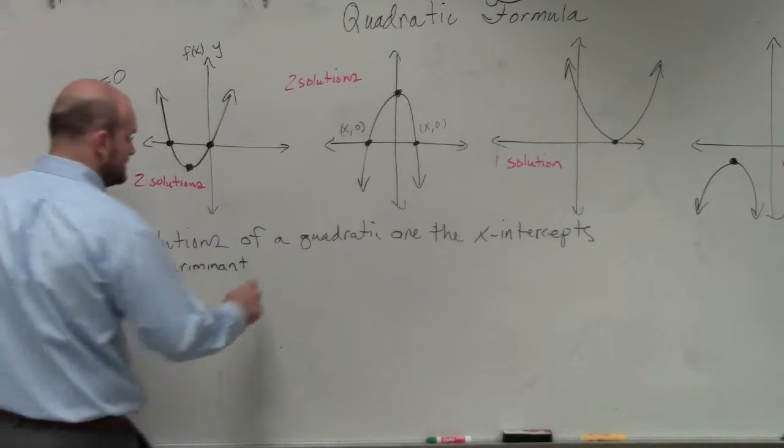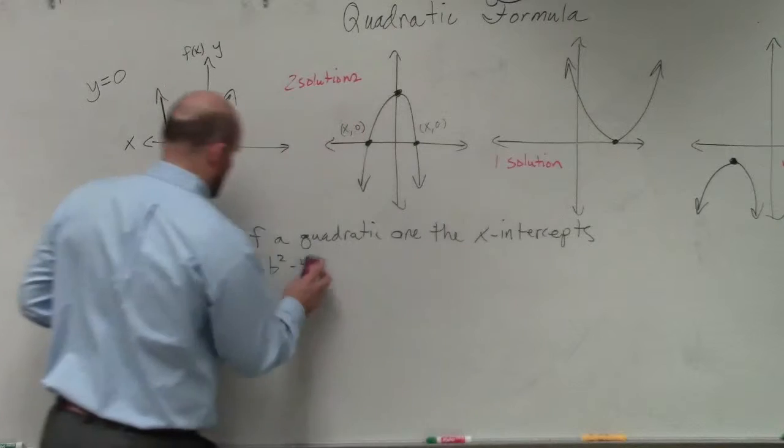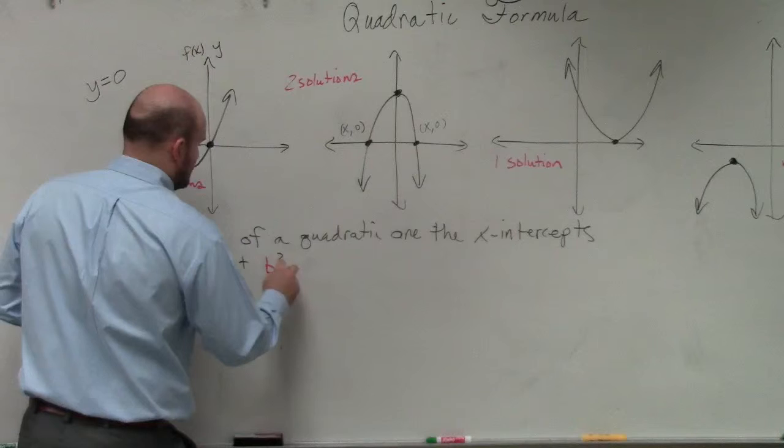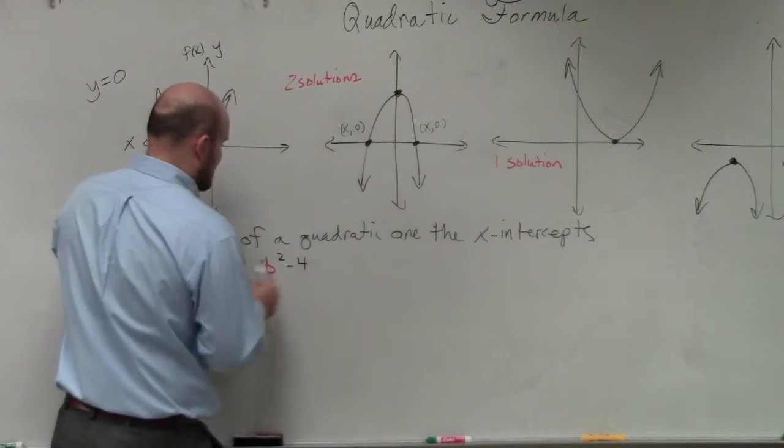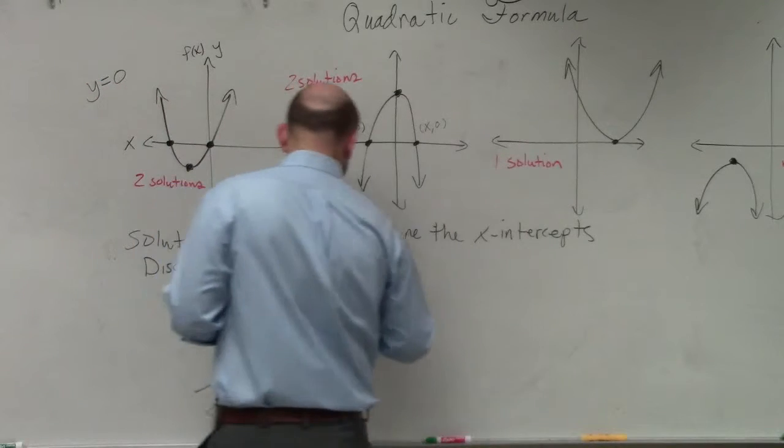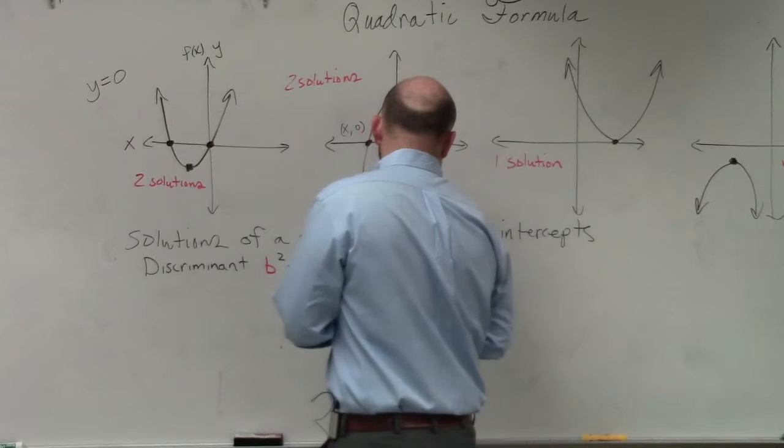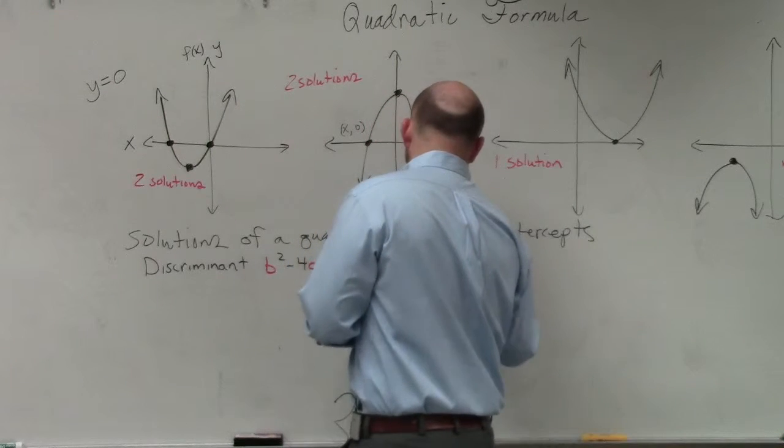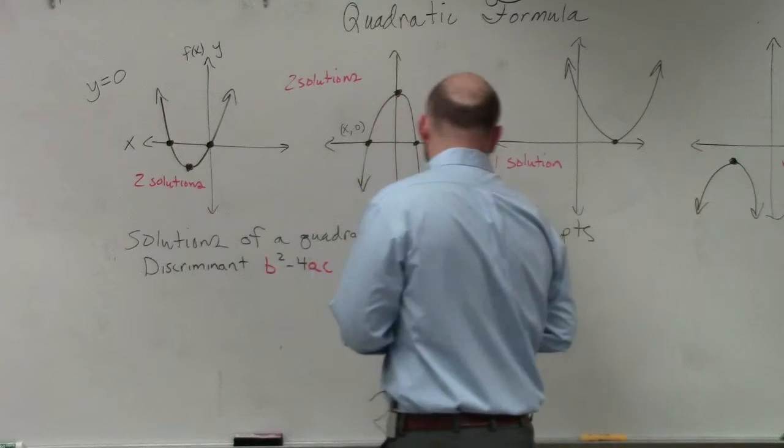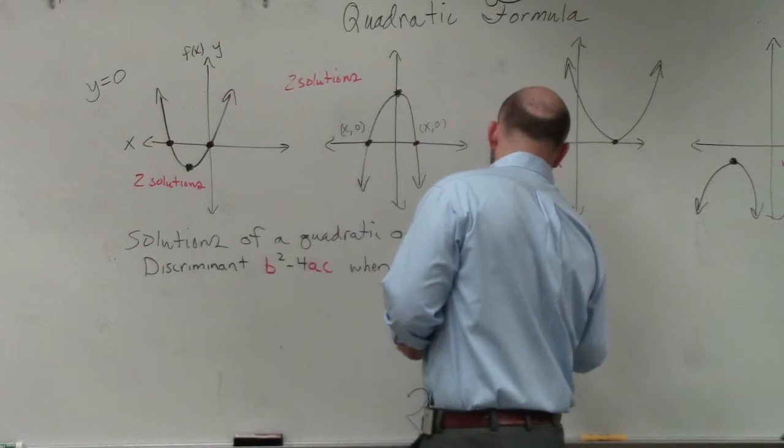And all the discriminant is, is b squared minus 4ac. b squared minus 4 times a times c, when ax squared plus bx plus c equals 0.